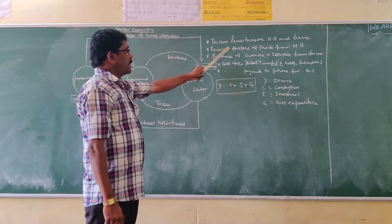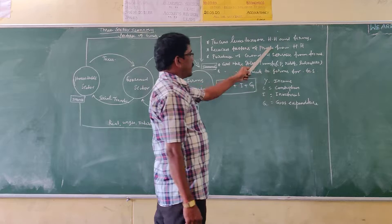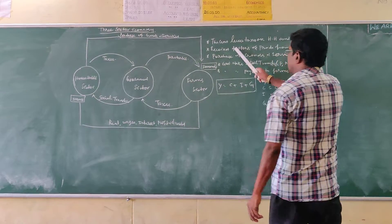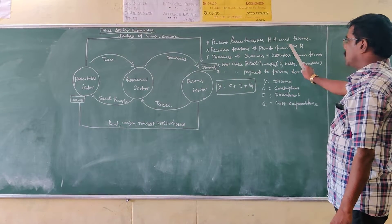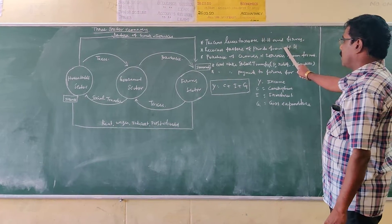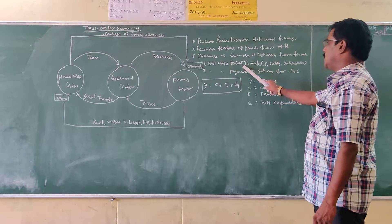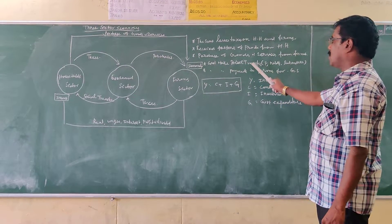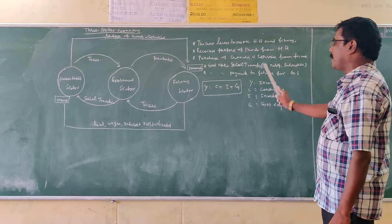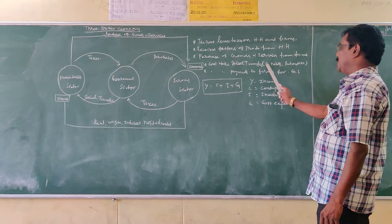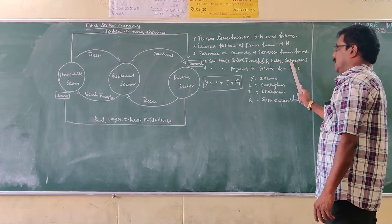The government receives factors of production from the household sector. For that, the government makes social transfers to the household sector in the form of pension, relief, and subsidies.